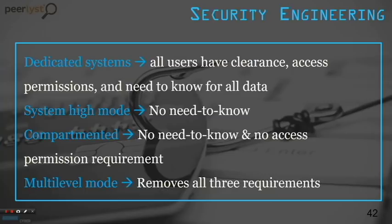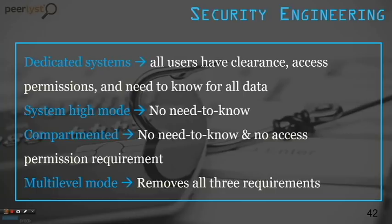Different system modes depend on the knowledge and clearance users need to access the system. A dedicated system requires all users to have clearance, access permission, and need-to-know for all data. System high mode requires clearance and access permissions but not need-to-know for all data. Compartmented mode requires only clearance, not access permission or need-to-know. Multi-level mode removes all three requirements. Know the differences between all four.